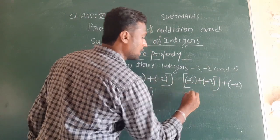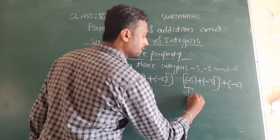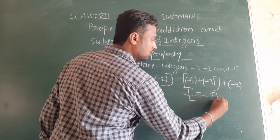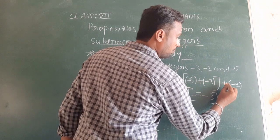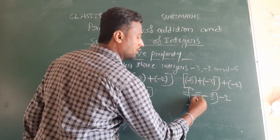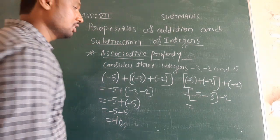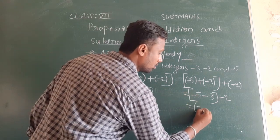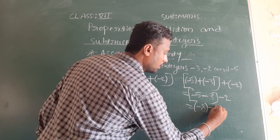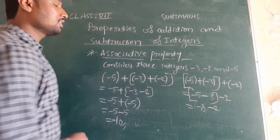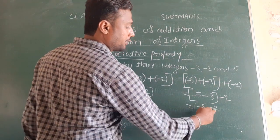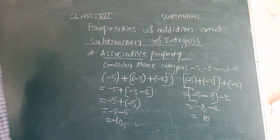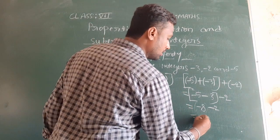Inside the square bracket: minus 5 plus into minus is minus 3. Minus into minus is plus, so five plus three equals 8, and the sign in front is minus, therefore minus 8. Then minus 8 minus 2: minus into minus is plus, so eight plus two equals ten, and the sign in front is minus. Again we get minus 10.